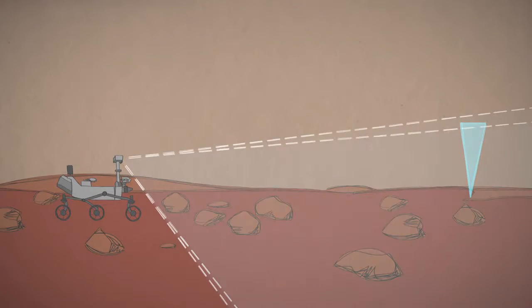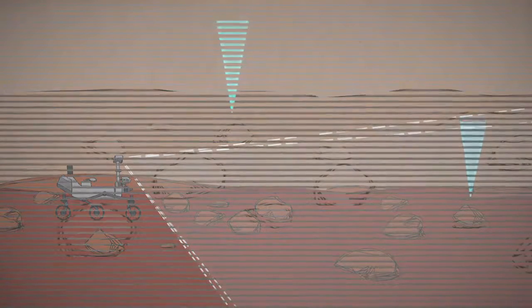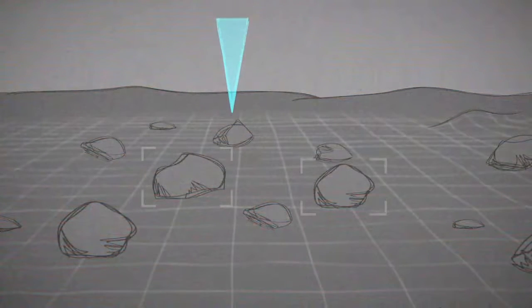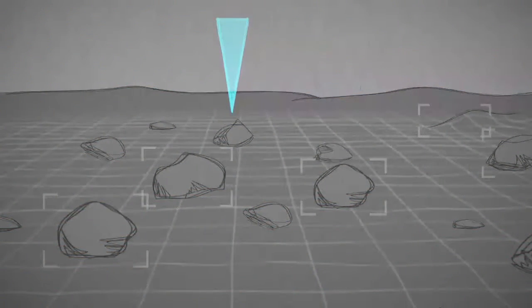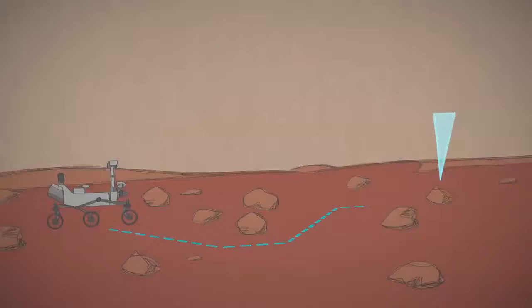Then, using two cameras like human eyes, the rover gets a 3D view of hazards such as large rocks and steep slopes. After mapping the danger zones, it plots the safest route to avoid them.